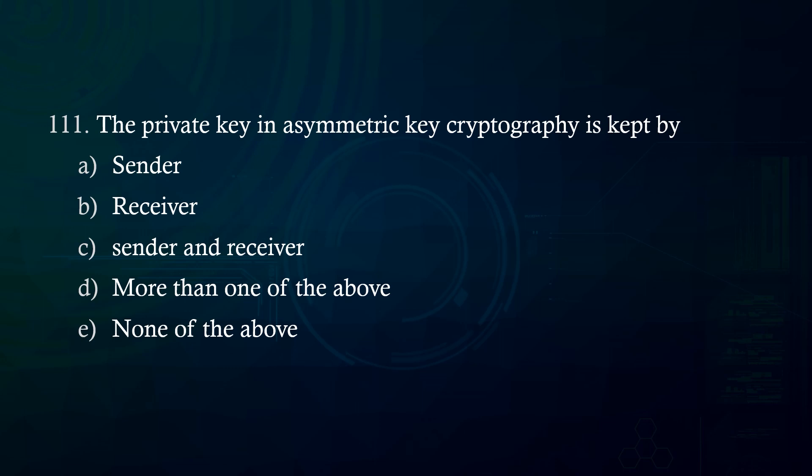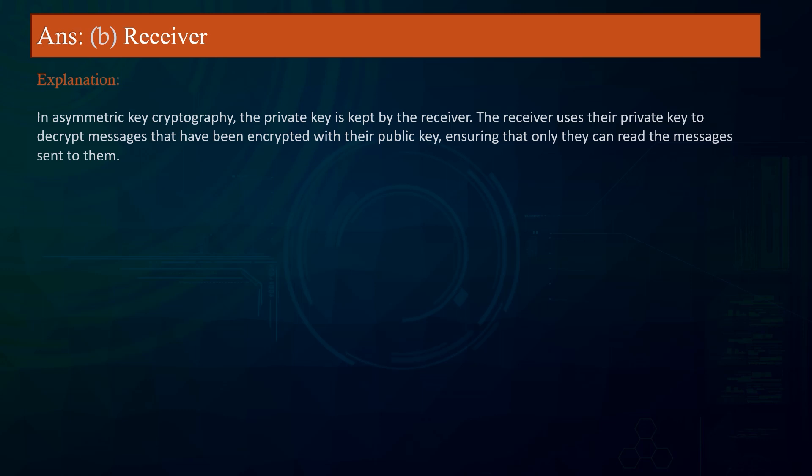The private key in asymmetric key cryptography is kept by: A. Sender. B. Receiver. C. Sender and receiver. D. More than one of the above. E. None of the above. Answer: Receiver. Explanation: In asymmetric key cryptography, the private key is kept by the receiver. The receiver uses their private key to decrypt messages that have been encrypted with their public key, ensuring only they can read messages sent to them.